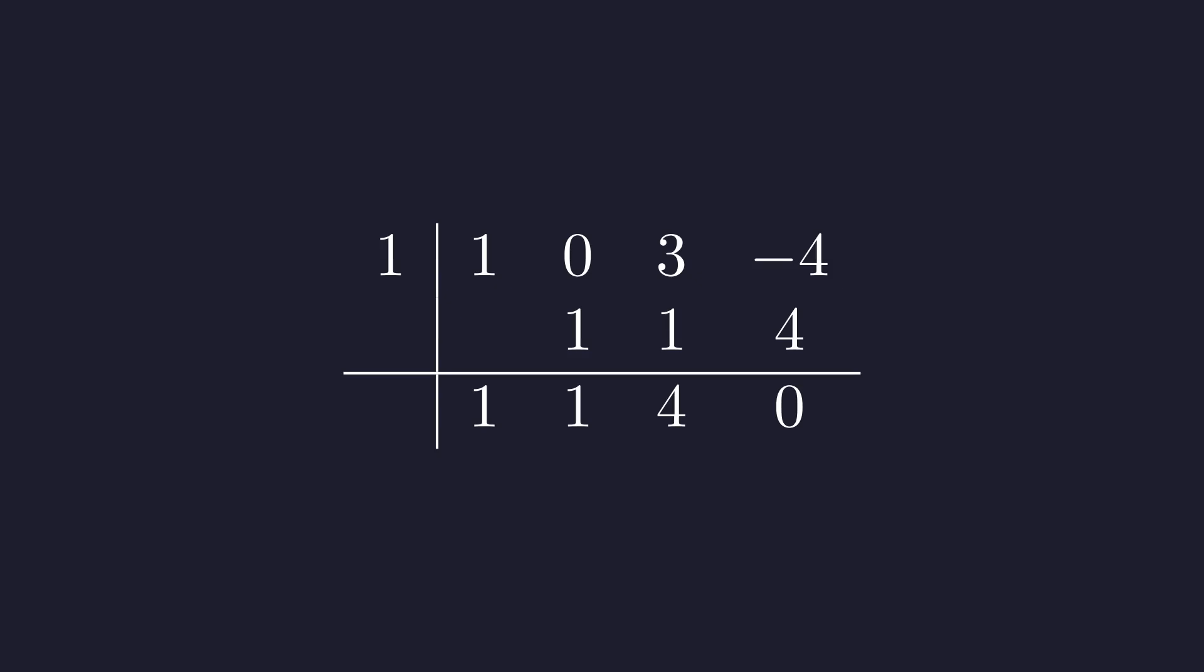Bring down the first one. Multiply it by 1. We get 1. Add that to 0. Gives us 1. Multiply that one by 1. We get 1 again. Add it to 3. That's 4. One last time. Multiply 4 by 1. We get 4. Add it to negative 4. And boom! Zero remainder.